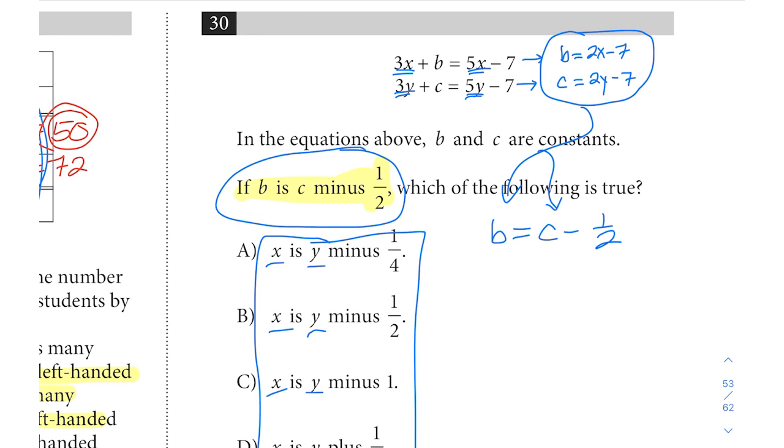We already have each of those variables isolated, so let's plug those in for b and c correspondingly in this equation. B was 2x minus 7, so we have 2x minus 7 equals c is 2y minus 7, so it would be 2y minus 7 minus one half. The minus 7s cancel out, so we're left with 2x equals 2y minus one half.